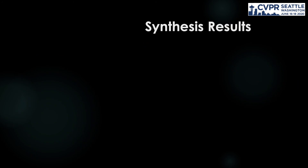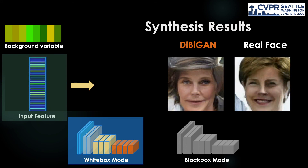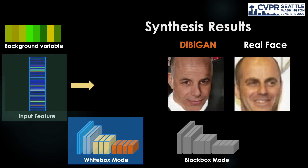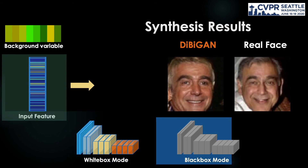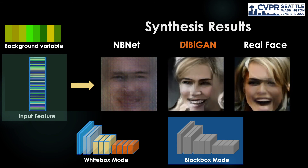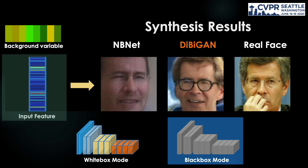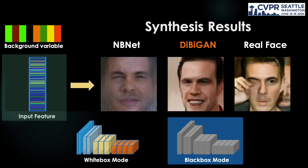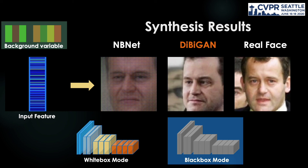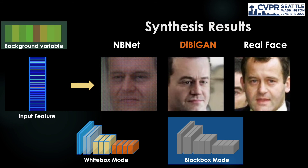The proposed DBGAN is validated on several testing subjects that have not been seen during the training stage. With white-box setting, DBGAN is able to synthesize realistic faces with similar ID features as the real faces. When the matcher is set to black-box mode, DBGAN further shows its advantages, robustly producing plausible synthesized faces against in-the-wild facial variations, expressions, and occlusions. Moreover, by fixing the input feature and varying the background variable, different conditions of the face can also be synthesized.